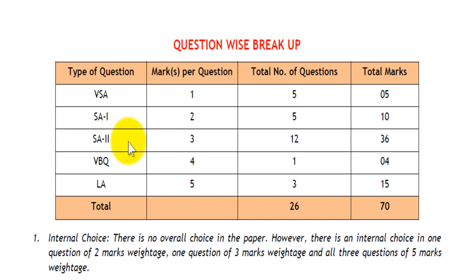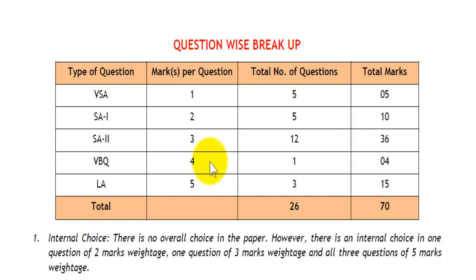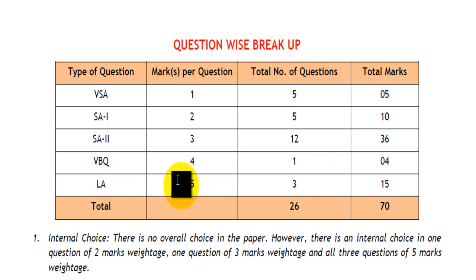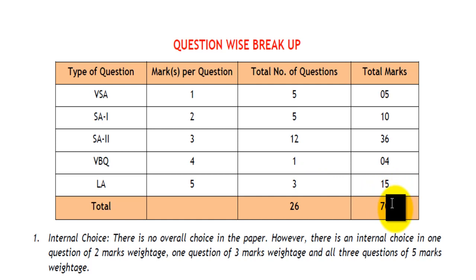The short answer 2 type of questions carry 3 marks per question and there will be 12 such questions totalling to 36 marks. Then there are value based questions which carry 4 marks per question and there is 1 such question totalling to 4 marks. Then there are the long answer type of questions which carry 5 marks each, with 3 such questions totalling to 15 marks, making a total of 70 marks.